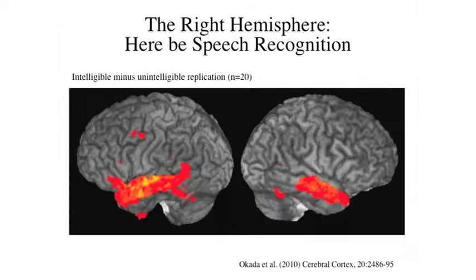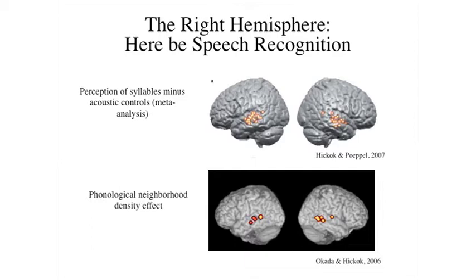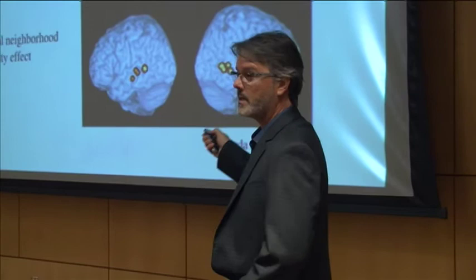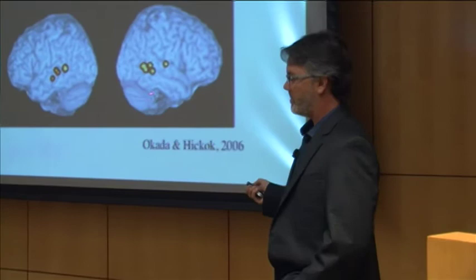This is incorrect. When we redid this experiment about 10 years later with more subjects using fMRI — a more sensitive method than the original PET study — we found that left anterior region, but also lots of right hemisphere activation. It's not as left-dominant as previously thought. Further experiments looking at the perception of syllables compared to acoustic controls, plotting activation locations across multiple studies, confirm the pattern is not left-dominant but bilaterally distributed.